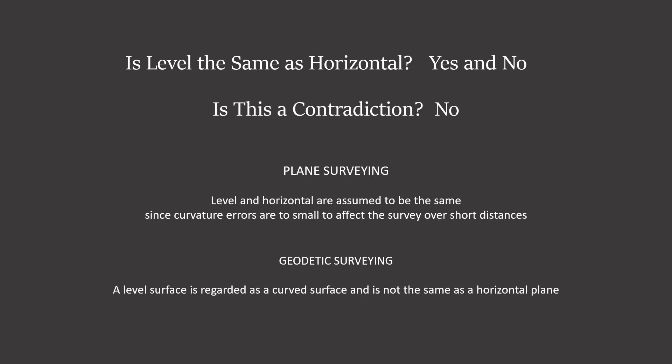So yes, I stand by my claim at the beginning of this video. Is level the same as horizontal? Yes and no, depending on the context in which we are using the words. Is this a contradiction? No, because in plane surveying, we are only assuming that level and horizontal are the same — we aren't saying they are the same, because in most cases we can't even see or measure the difference between the two. But in geodetic surveying, a level surface is regarded as a curved surface, and it is not the same as a horizontal plane.